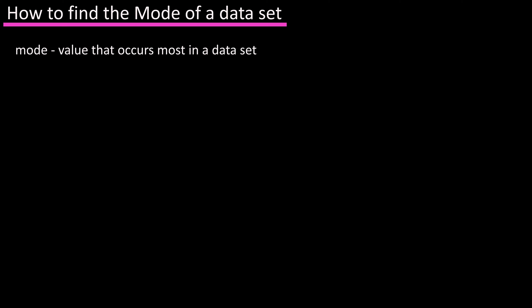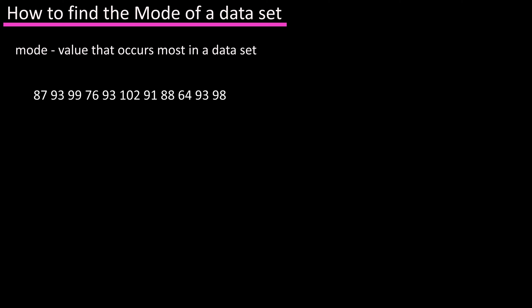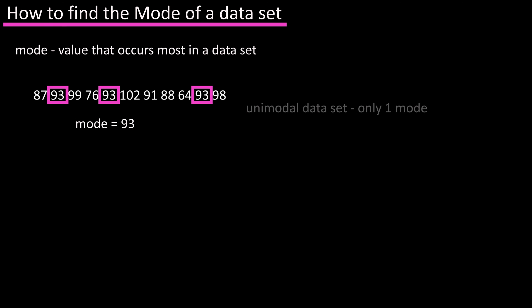The mode is the value that occurs most often in a data set. For instance, in this data set, 93 occurs three times, which is more than any other value, so it is the mode. This is a unimodal data set, because it has only one mode.